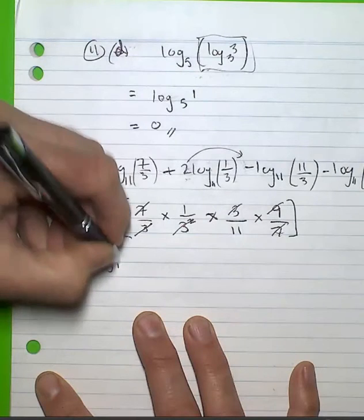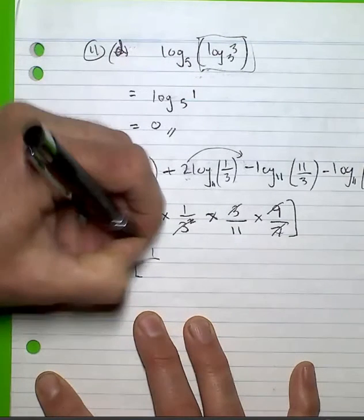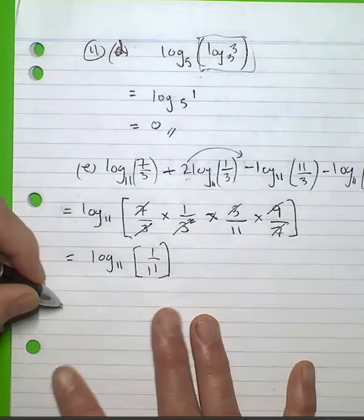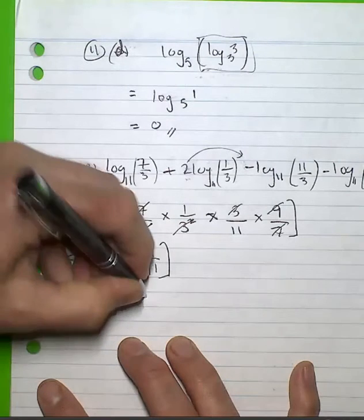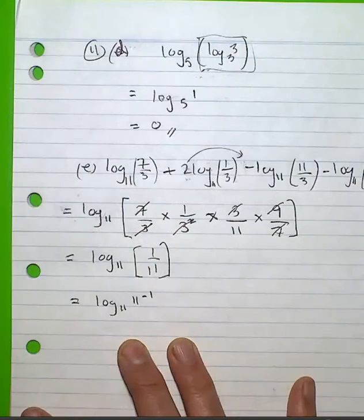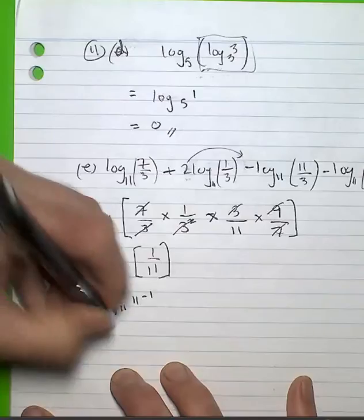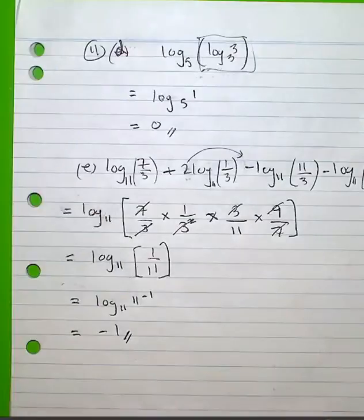So I'm left with the following. I'm left with log base 11 of 1/11, and that's the same as log base 11 of 11 to the negative 1, which is negative 1 as my answer.